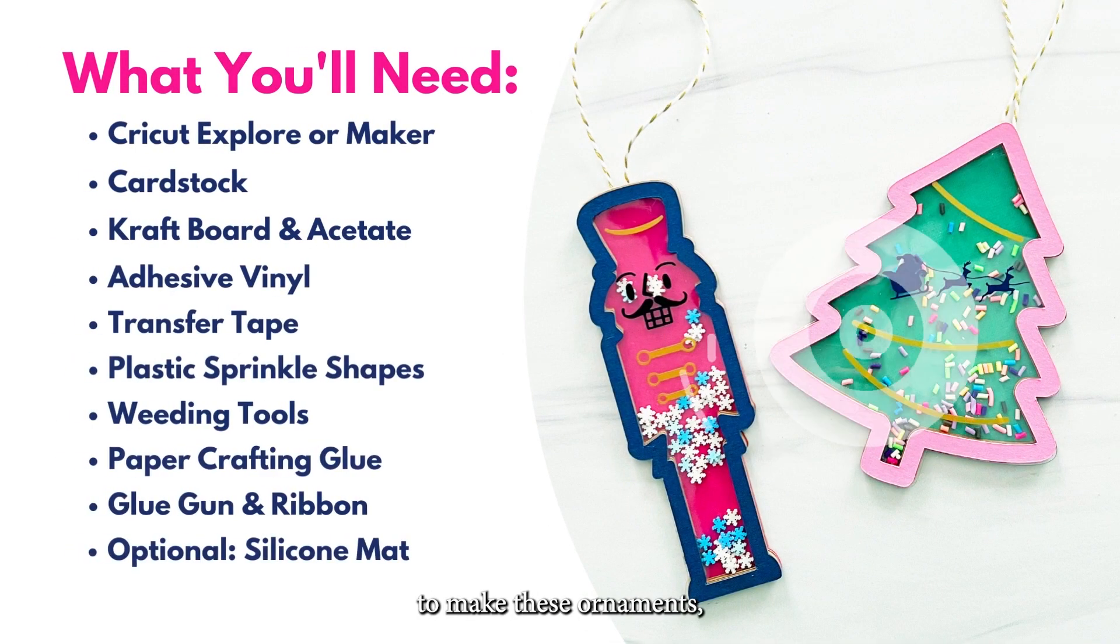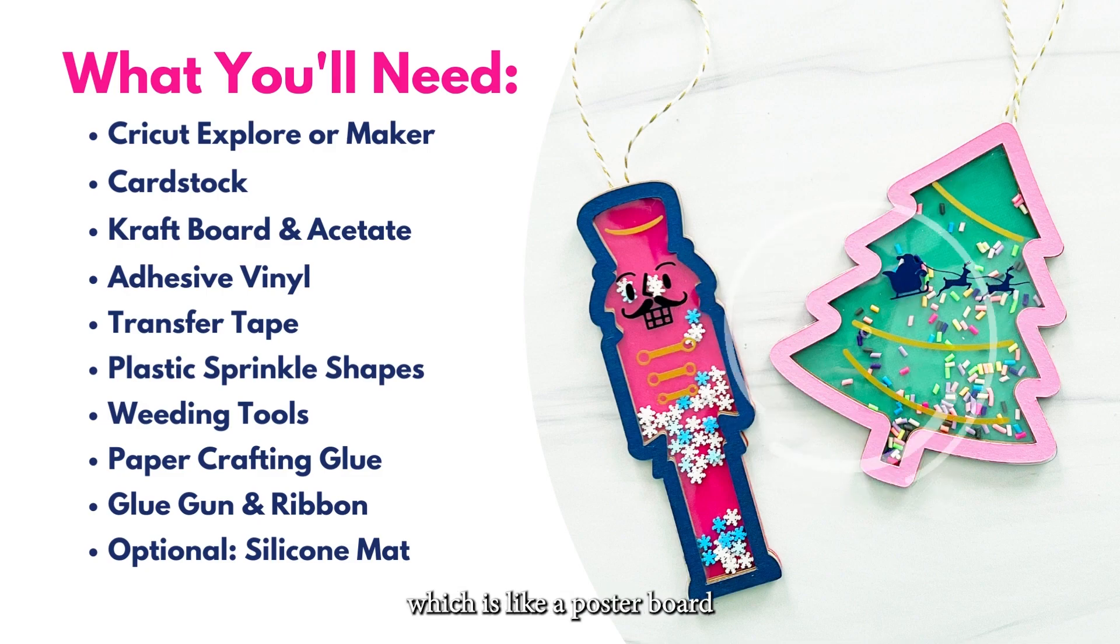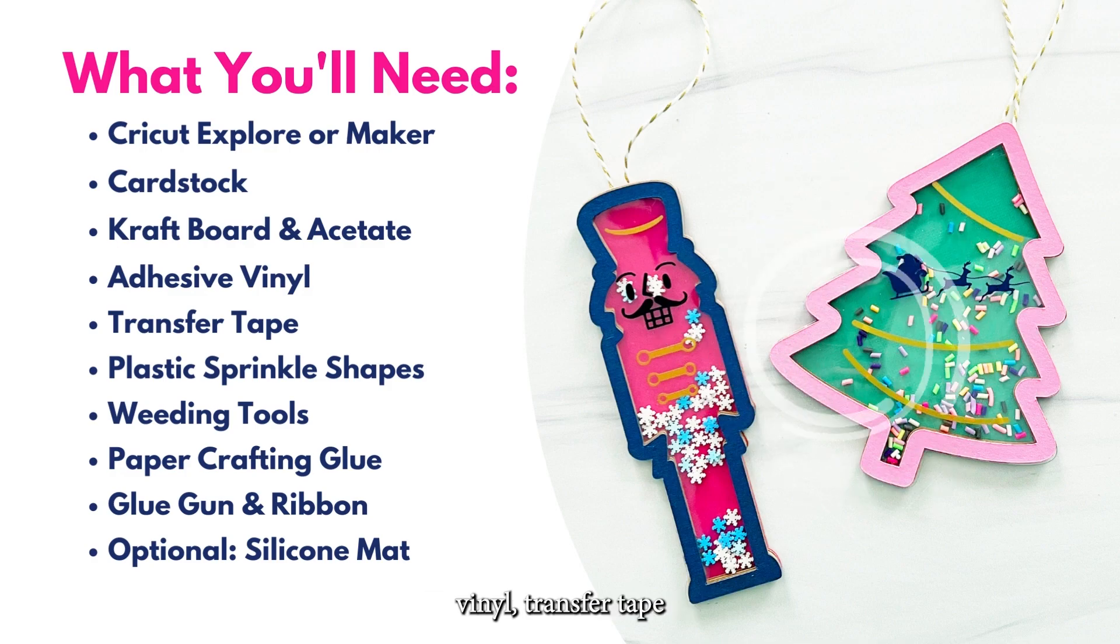Here's what you'll need to make these ornaments and I'll put the entire list in the links below. I'm using a Cricut Explorer 2, but you can use a Maker. You want cardstock, craft board, which is like a poster board in white or beige, as well as clear acetate. You'll also need adhesive vinyl, transfer tape, and these little plastic sprinkles or shapes that you can put inside the ornaments. You'll also need paper crafting supplies and optional silicone mat.